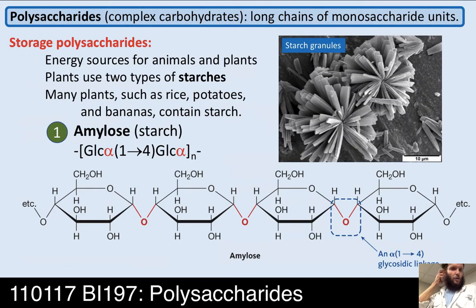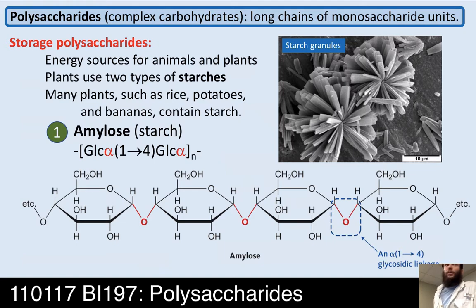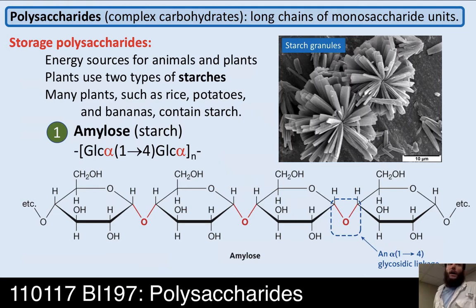Let's look at some of these larger sugars — we call them complex carbohydrates because they are more complex. Some of them are truly enormous, with hundreds of thousands or even millions of sugar units in the same macromolecule. A polysaccharide is a long chain of monosaccharide units. The categories include storage polysaccharides and structural polysaccharides.